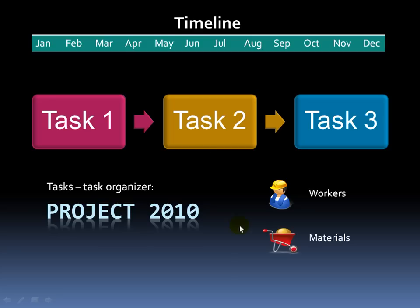The next resource would be materials. So once they're working on writing the book, do they need a ream of paper to write the book on, or are they going to use a word processing program like Word 2010? And then finally you have the cost between the two — are you going to pay your workers hourly or salary? And then of course the cost of the materials.